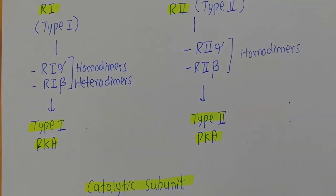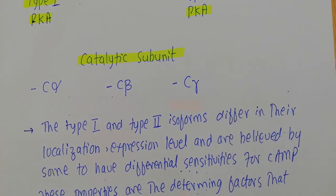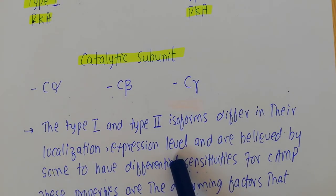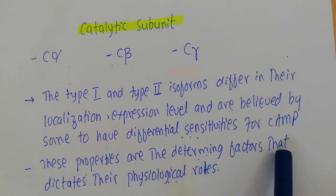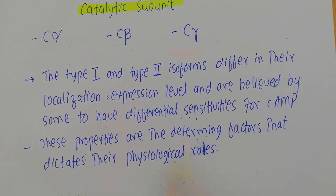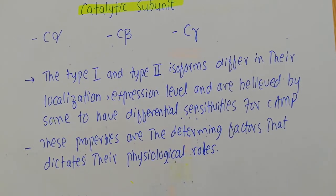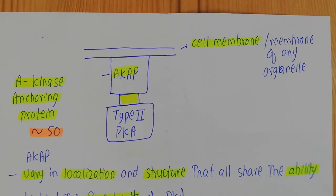The type 1 and type 2 protein kinase A isoforms differ in their localization - they are present in different cells or different parts of cells. They also differ in their expression levels, and they are believed to have differential sensitivities for cyclic AMP. These properties - localization, expression level, and sensitivity for cyclic AMP - are the determining factors that dictate the physiological roles of protein kinase A.